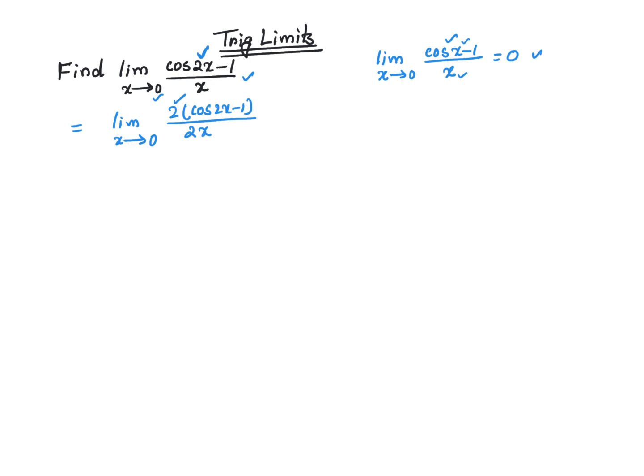And this 2, I could take it out. So that's going to give me 2 times the limit as x approaches 0 of cosine of 2x minus 1 divided by 2x.